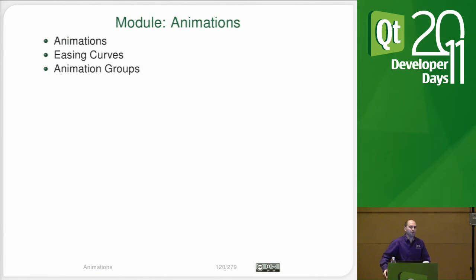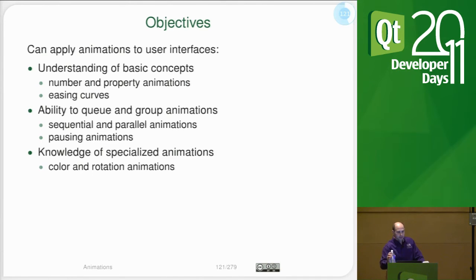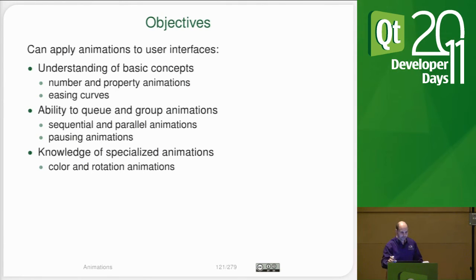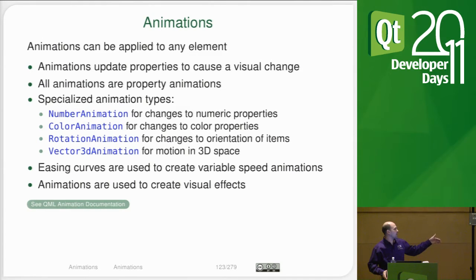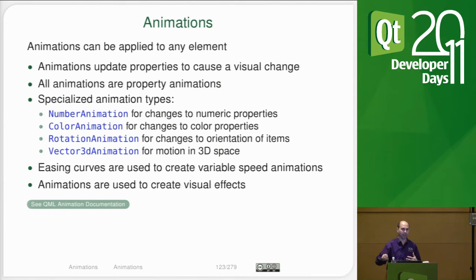Now let's talk about all those fancy animation properties you can configure. Most animation work is simply configuring what's available — there are about 30 easing curves that come with Qt. The standard set of animations includes the property animation, which can change almost anything, and specializations called number animation, color animation, and rotation animation. These have specific properties to determine how the color or number changes over time. There is also a vector 3D animation used in the QML 3D package.